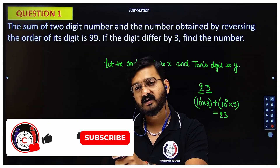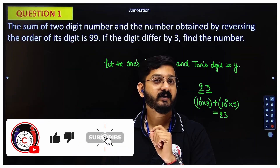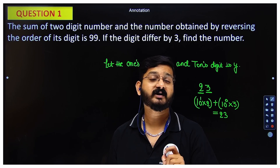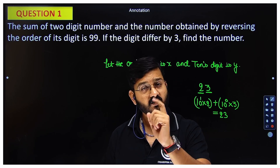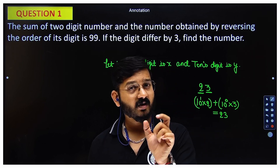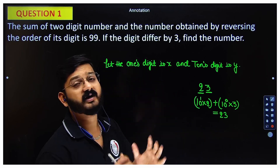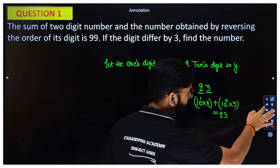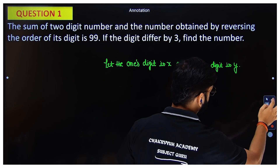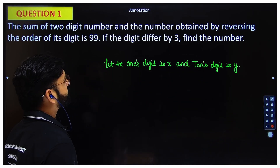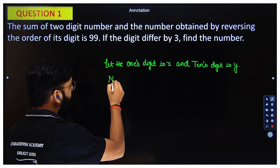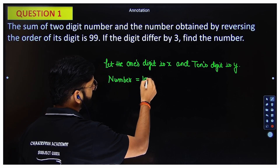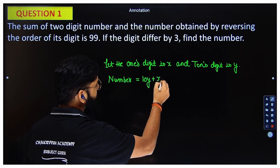For example, if the number is 123, the 1 is at the hundreds place so it's multiplied by 100, 2 is multiplied by 10, and 3 is multiplied by 1. Take care of these small things so you don't make a fundamental mistake in the exam. So, with one's digit as x and ten's digit as y, the number will be 10y plus x.